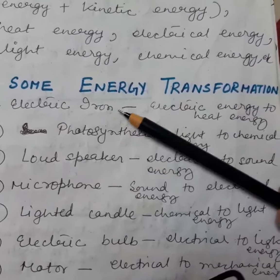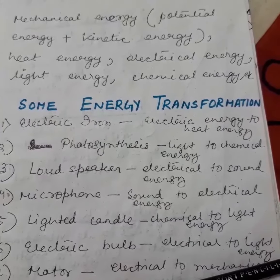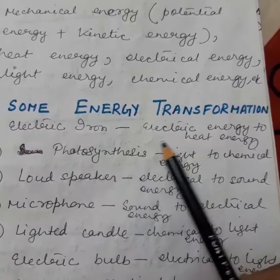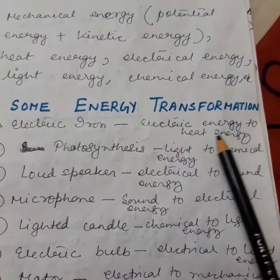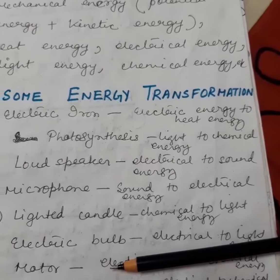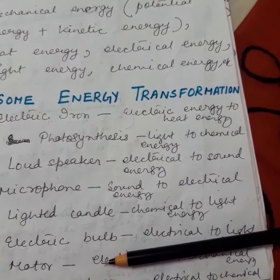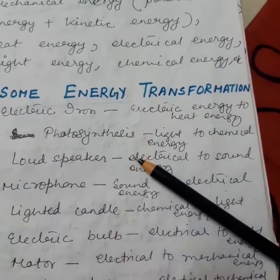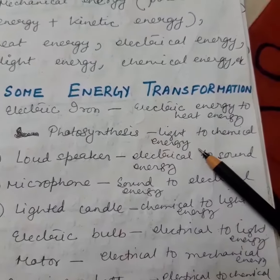Example one: electric iron. When we give electrical energy to an iron used to iron our clothes, heat is produced — so electrical energy is converted to heat energy. Example two: photosynthesis. Plants take in light in order to make their food. Food is a form of chemical energy, so in photosynthesis, light energy is converted to chemical energy. Example three: loudspeaker — electrical energy is converted to sound energy.